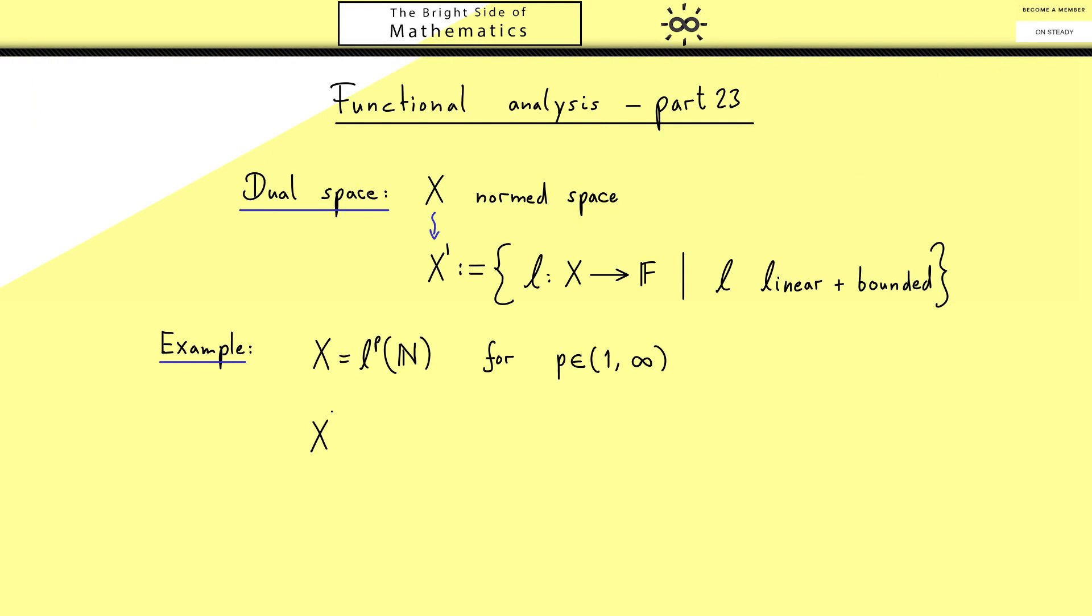Namely we can say X prime looks more or less the same as the LP space and this p prime there is just a number, indeed it's the Holder conjugate of p. More concretely this means that 1 over p plus 1 over p prime is exactly 1.